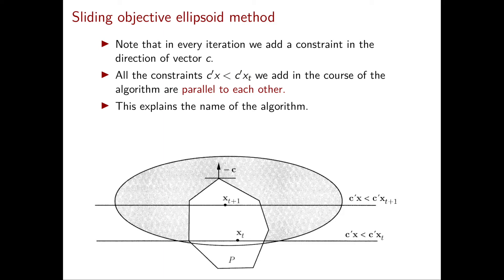Note that, as opposed to the primal-dual approach, the sliding objective ellipsoid method doesn't give any guarantee on how many iterations we need to find an optimal solution. So the sliding objective ellipsoid method does not result in a polynomial time algorithm for linear programming. However, there is a variation that achieves polynomial running time — a combination of the sliding objective ellipsoid method and binary search. In this course, we are not going to present this method.